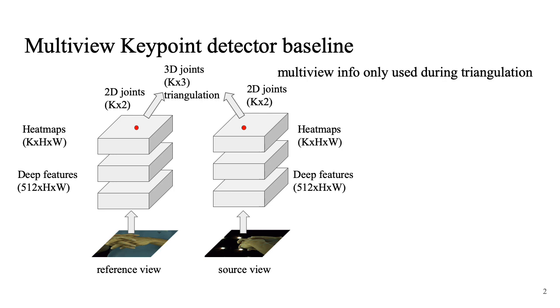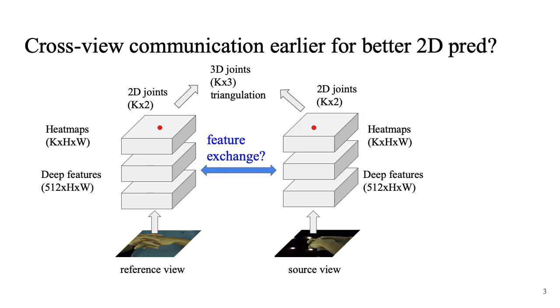However, the problem is, multi-view info only used during the triangulation. Ignore the epipolar geometry. We're wondering if we can do a feature exchange before the 3D joints triangulation to obtain more accurate 2D joints.